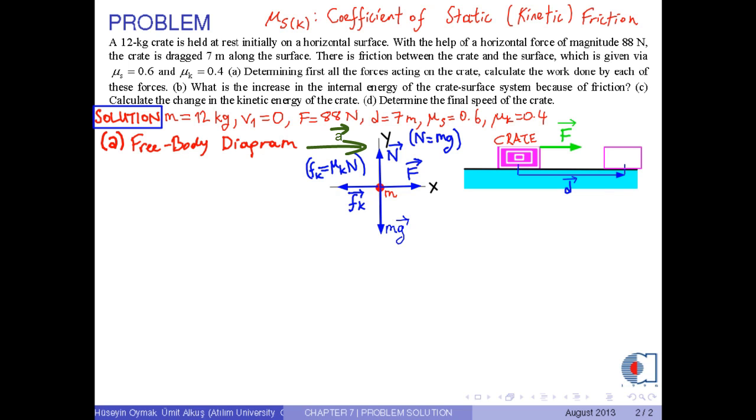The work done by F is calculated by the formula F dot D. Since the angle between F and D is zero, then with the corresponding values, we obtain 616 joules.